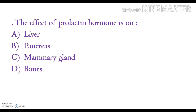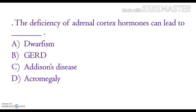The next question: the effect of prolactin hormone is on the liver, pancreas, mammary glands, or bones. The correct answer is option C, mammary glands.